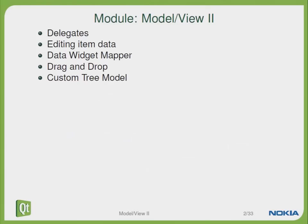In model-view part 2 you learned how to create your custom delegates, how to edit the item data, how to use the data widget mapper to convert the data into your user widgets, how to use drag and drop, and how to create a custom tree model. We hope you enjoyed this session of our Qt Essentials training. For the full experience including labs, Q&As and additional info, we recommend you attend the full multi-day Qt Essentials training course available from eGITS or any one of the Qt training partners. For full details check out qt.nokia.com. Thanks for watching.